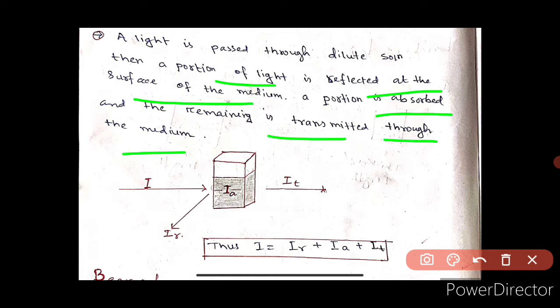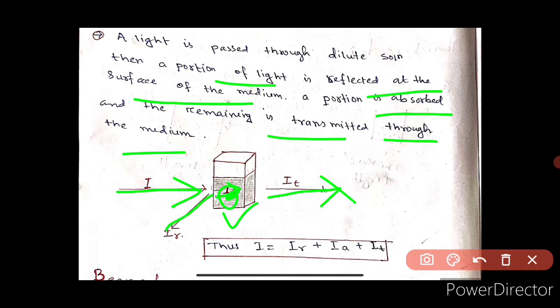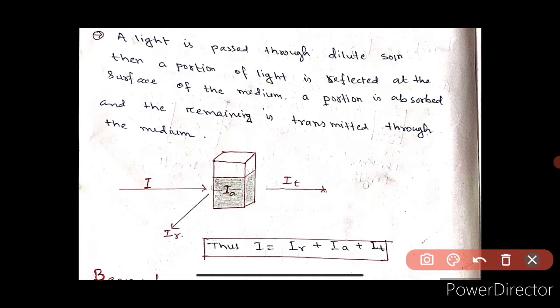This light portion is the incident light. A portion is absorbed by the molecules of the sample, a portion is transmitted, and one portion at the surface of the medium is reflected. This is the introduction.